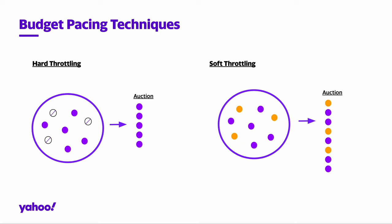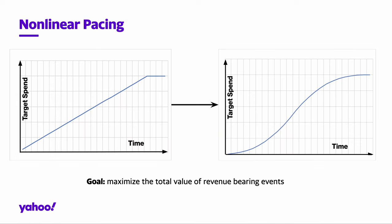In this work, we present our budget pacing system called Mystique, which implements soft throttling. The pacing factor is determined based on the proximity of the real spend to a daily target spend curve. If the spend is below the target, then the factor is increased, and if the spend is above the target, then the factor is decreased.